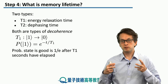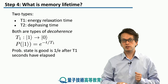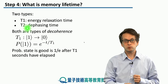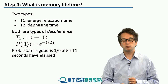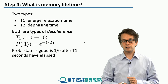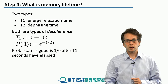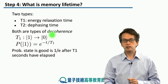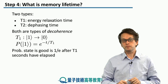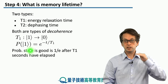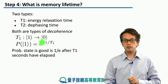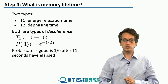What are the processes degrading our memories? The two main processes are energy relaxation and dephasing, characterized by two different timescales referred to as T1 and T2. T1 characterizes the energy relaxation time, whereas T2 gives us the characteristic dephasing time. The energy relaxation time T1 tells us how quickly our qubit decays from the excited state — state 1 — into state 0. The probability that, if we initialize our state in state 1, we still find it in state 1 after some time t, is given by e to the power of negative t over T1.